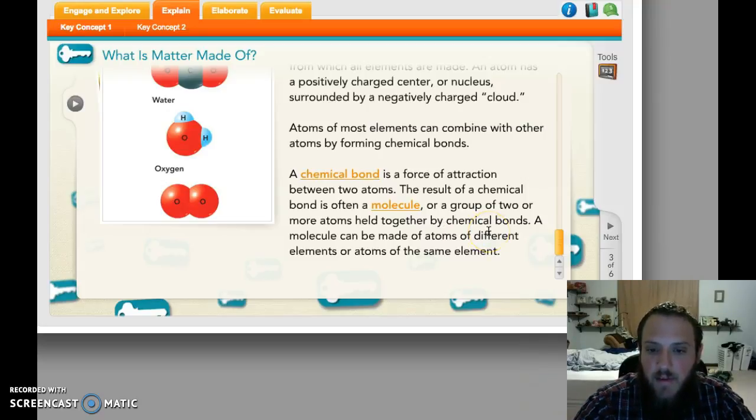A molecule can be made up of different atoms or the same kind of atoms. If you look over here, we have a molecule of water made of oxygen and hydrogen. And here we have a molecule made of just oxygen. Two oxygen stuck together.